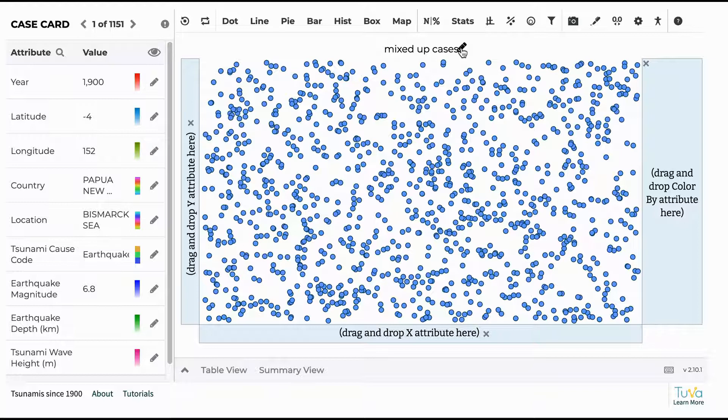This is where they'll want to put a title to the graph. So instead of mixed up cases, they might say, how does earthquake magnitude affect tsunami wave height? So they'll title their graph so that they know what they're working with.